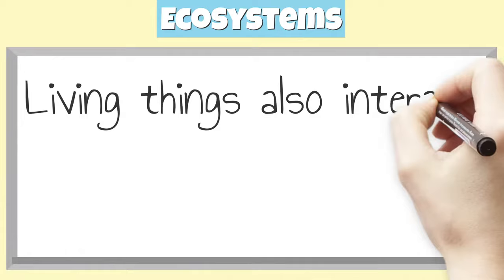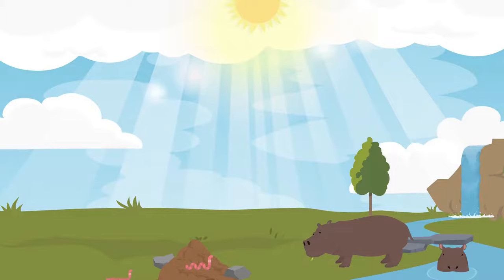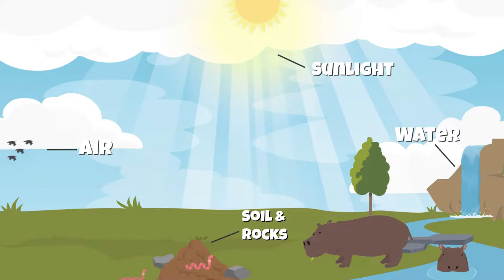For example, organisms interact with water, sunlight, air, soil, and rocks. The interaction and dependence that exists between living and non-living things are what make up an ecosystem.